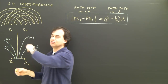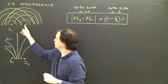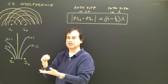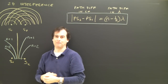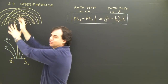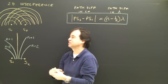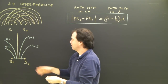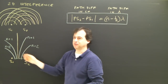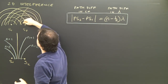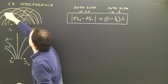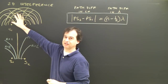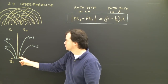I can also put dots where a crest from one source is meeting a trough from the other source. When a crest and a trough meet, they cancel out and the water will be very calm. If I put all these dots on there marking those points, it creates this kind of fan shape. All the points here line up where crests are meeting troughs. Instead of drawing this complicated pattern, I'm going to simplify it and just draw these lines.